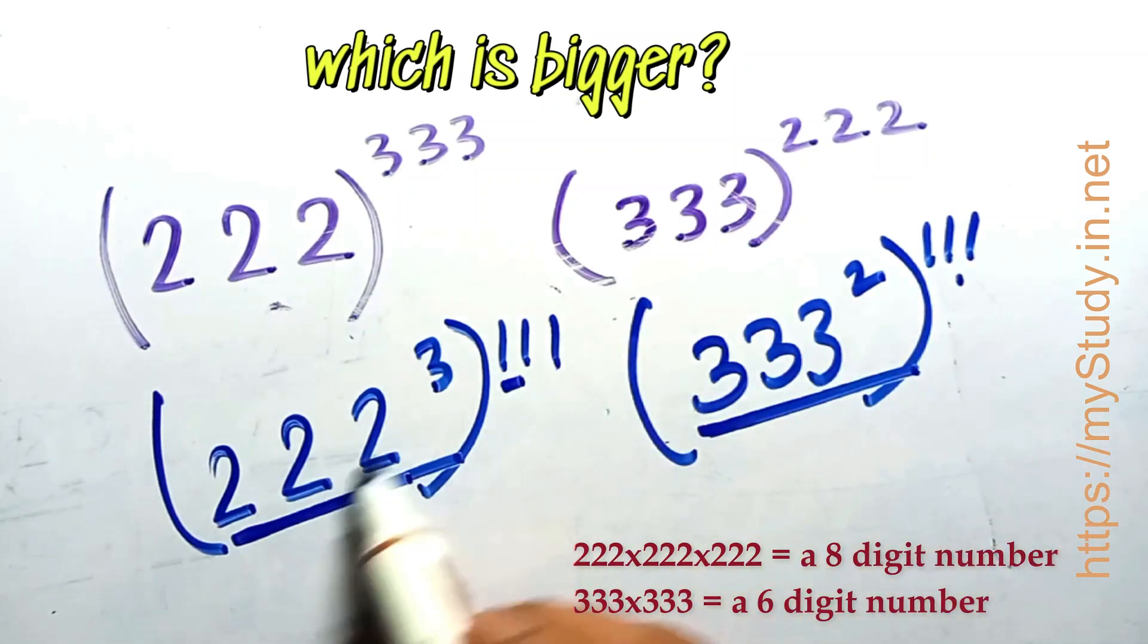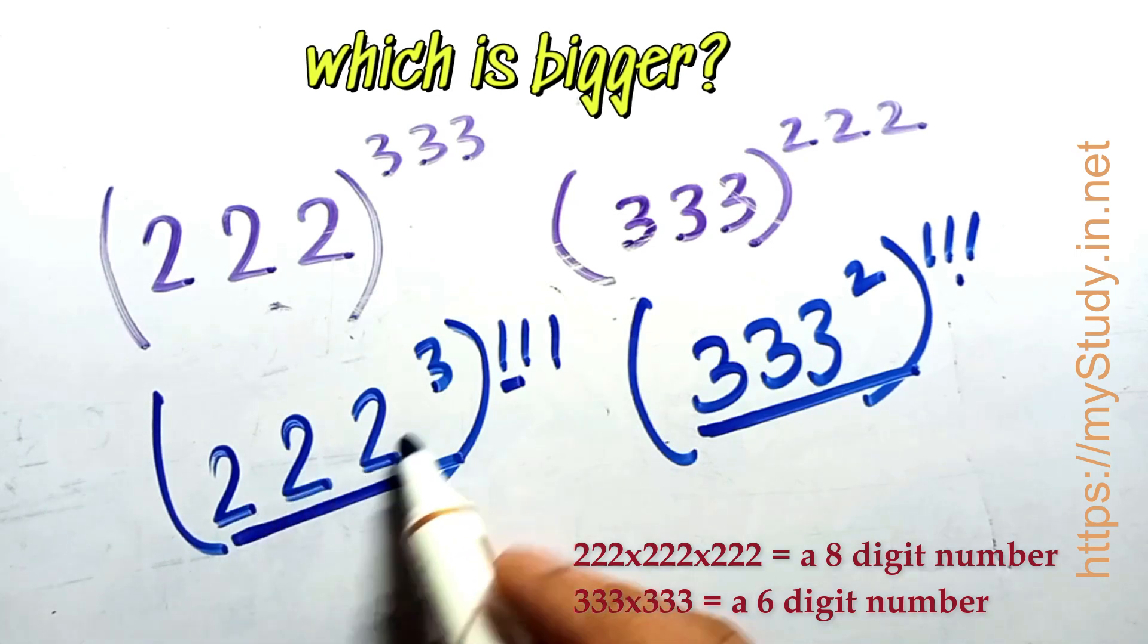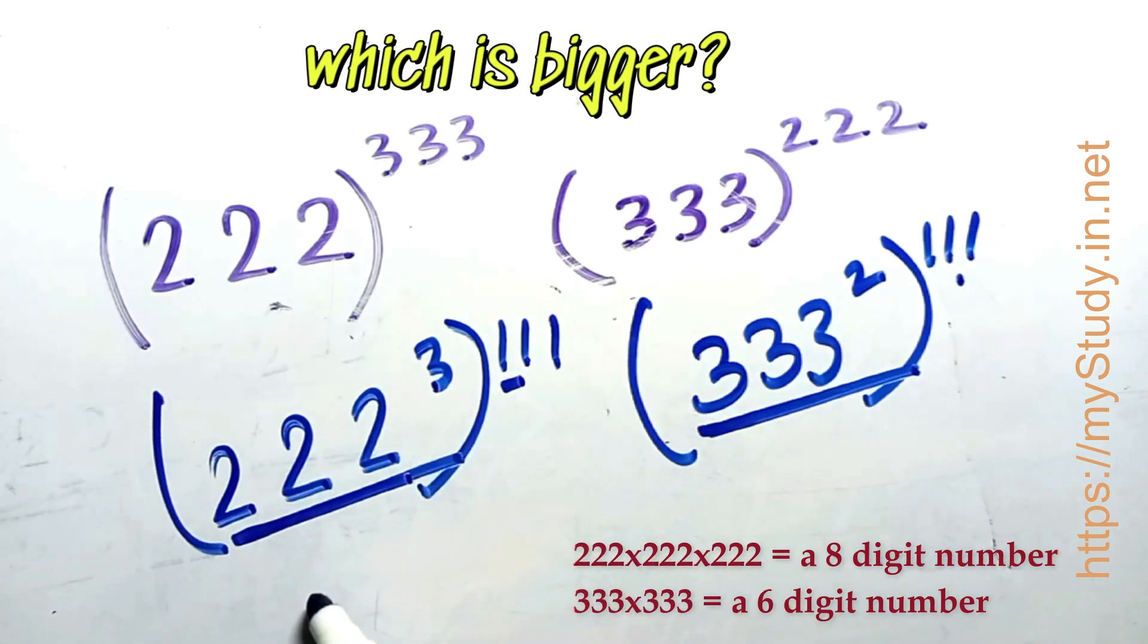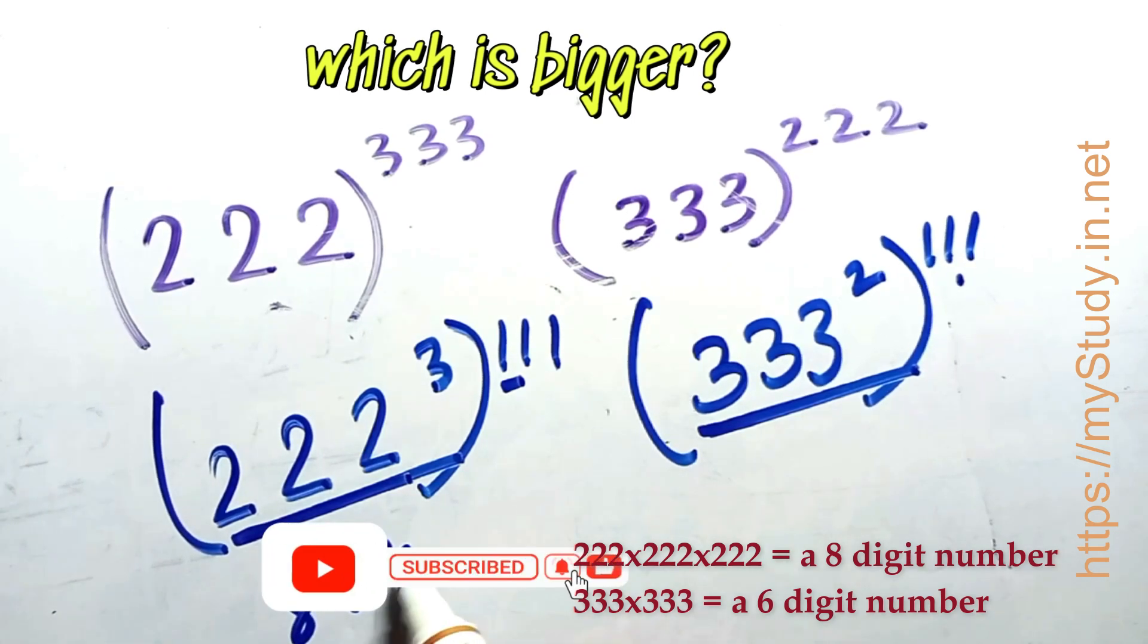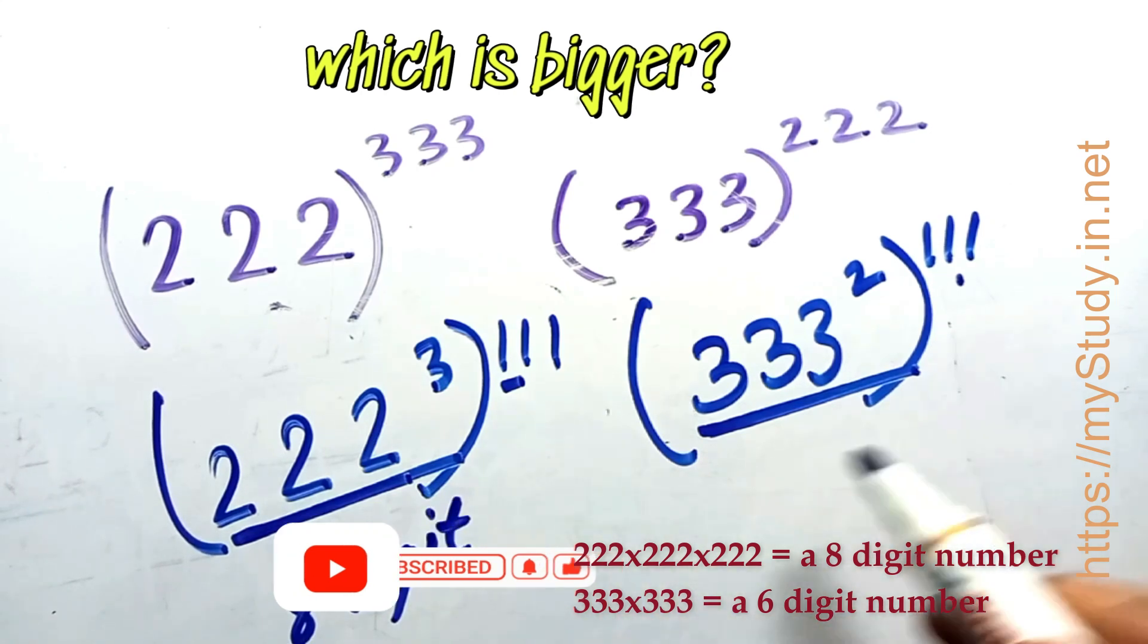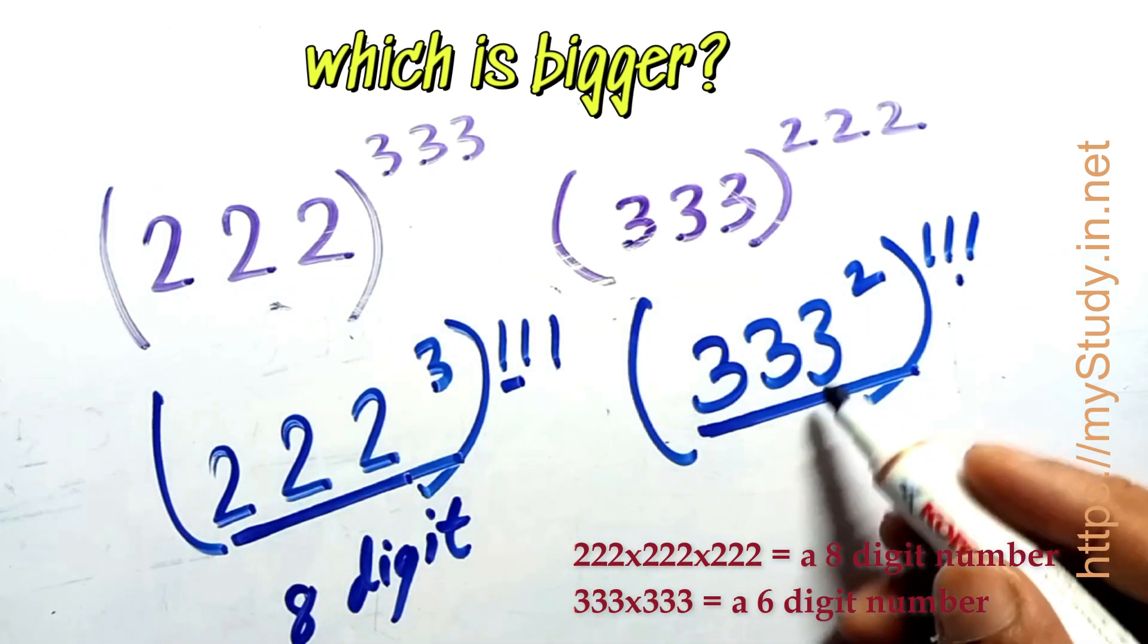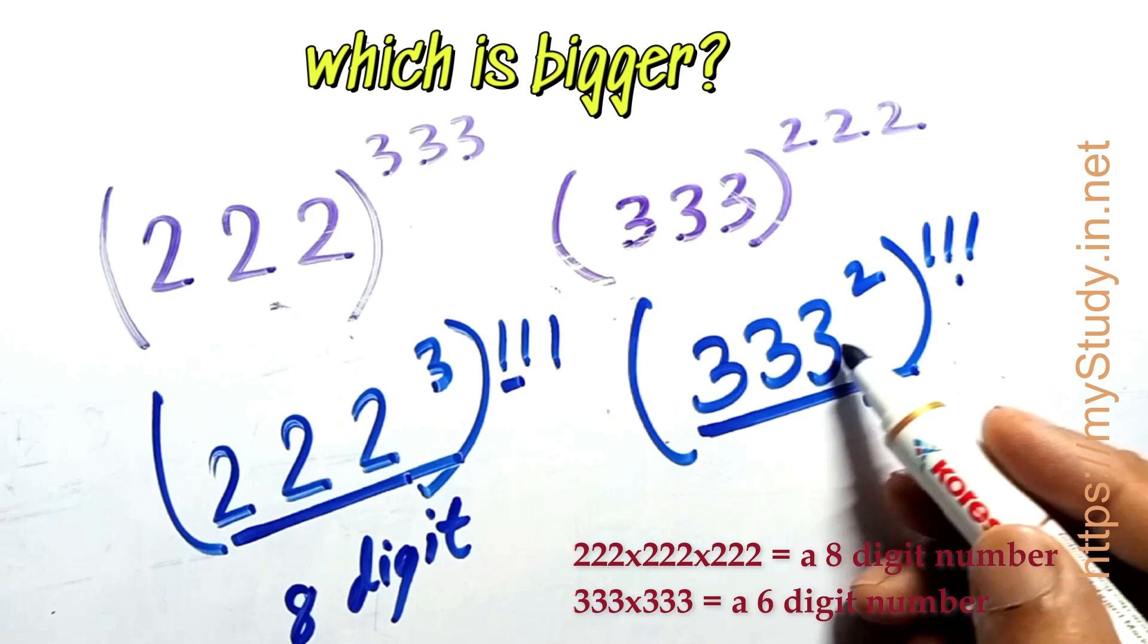So if you compare these, if you multiply 222 three times, you will get an eight digit number. Don't forget to like and subscribe. An eight digit number, whereas if you multiply this 333 into 333.